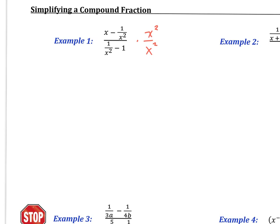The concept we're going to use for our examples is: multiply the numerator and the denominator by the LCD. When we do this, we have to make sure that we distribute that x squared all the way through. When x squared multiplies by the x in the numerator, we're left with x cubed. When x squared multiplies by 1 over x squared, we get minus x squared over x squared, which is the same thing as 1.